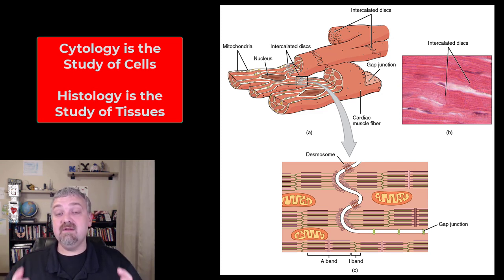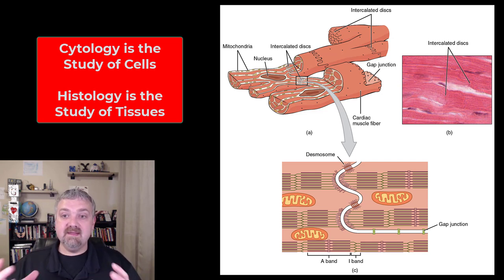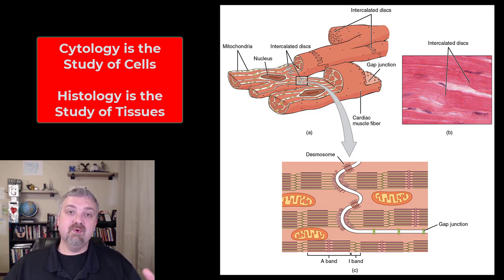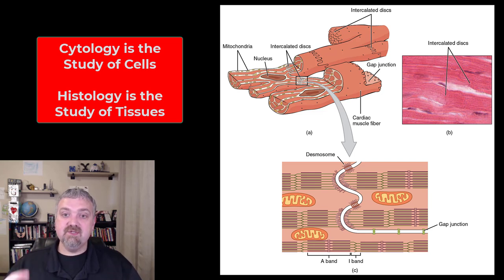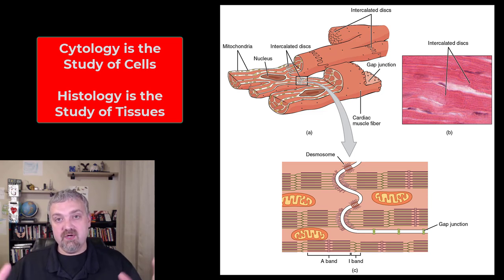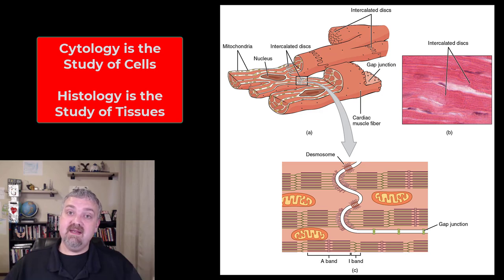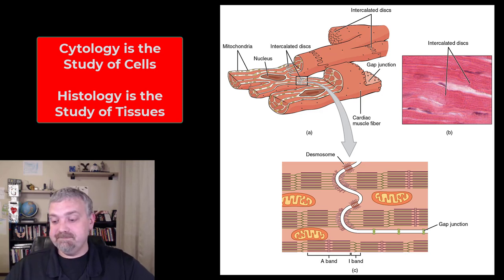A cell is the basic unit of life — it's the smallest living thing — and we'll look at all the structure and function of individual cells. Histology is when you put a group of cells together that have a specialized function. So one heart muscle cell is cytology, but when you put all your heart muscle cells together, that forms heart muscle tissue, and when we study it in that way, it will be histology.